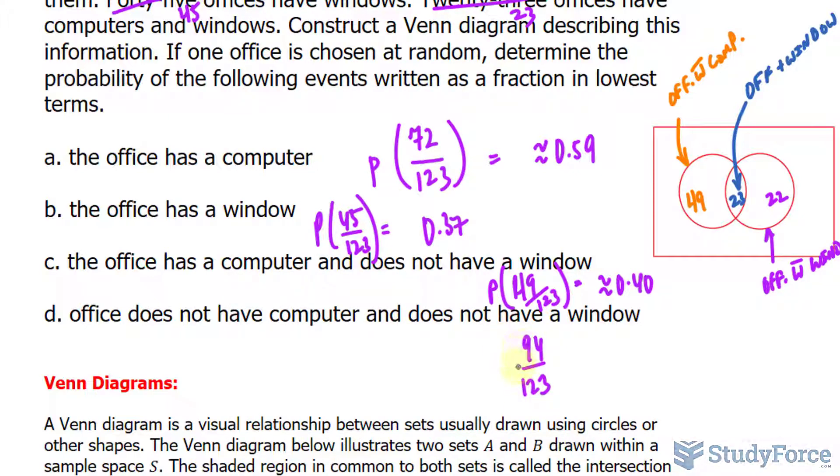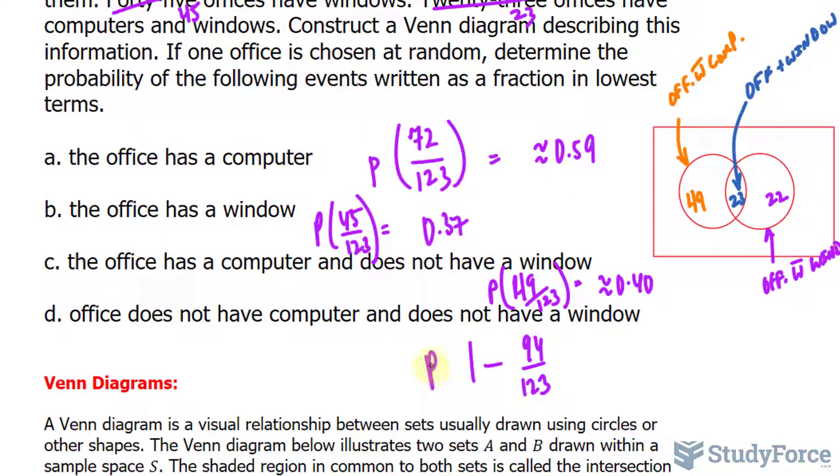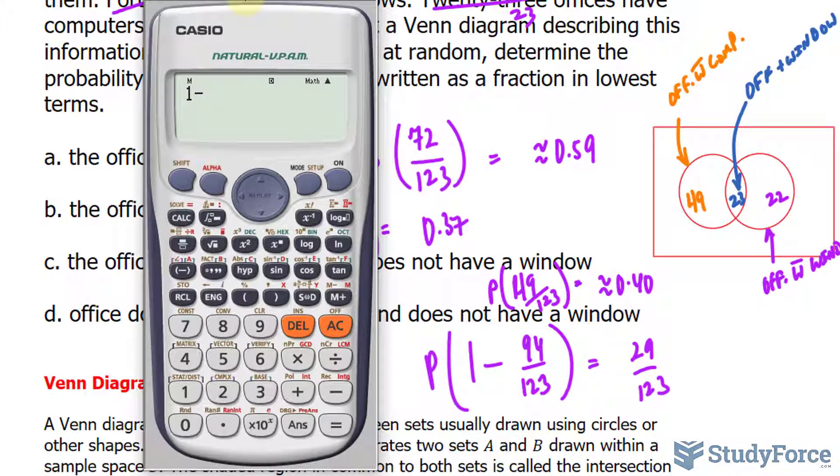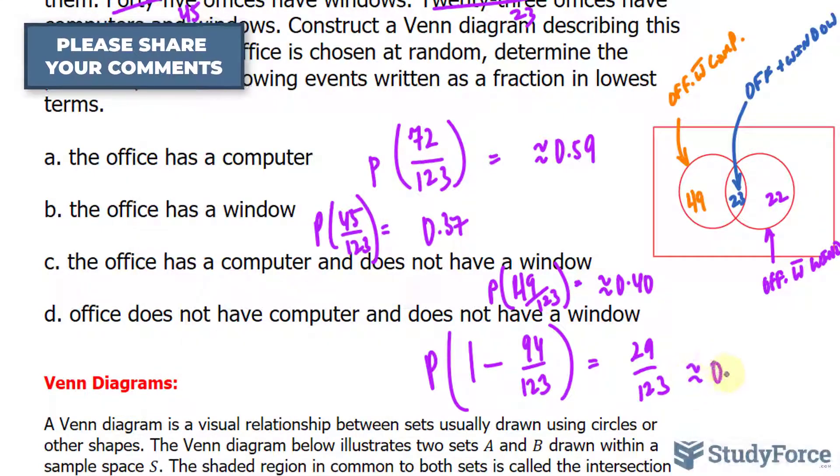We'll find out what that is and then subtract that from 1. So 1 minus this number—this is technically called the complement of our set. The probability of 1 minus 94 over 123 is equal to 29 over 123. You can always use your calculator to confirm. That rounds to 0.24, or 24%.